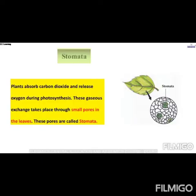Now we will see what stomata are. Plants absorb carbon dioxide through small pores in the leaves which are known as stomata. In the picture you can see stomata. We cannot see these small pores with our naked eye — they can be observed only through a microscope.